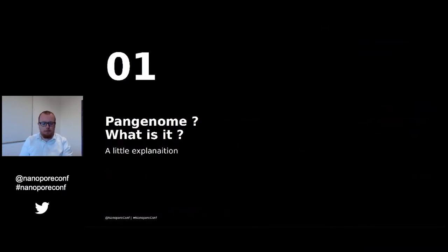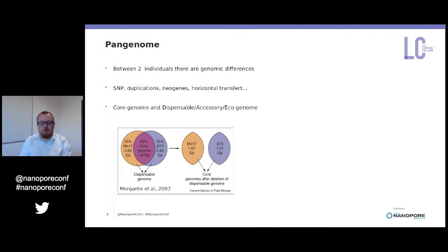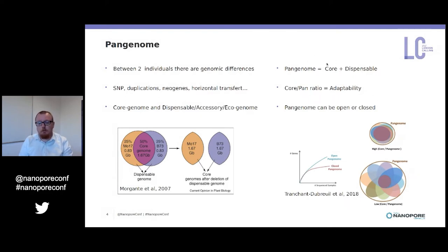What is a pan genome? The pan genome idea is that between two individuals we have differences not only in terms of SNPs but also in terms of regions and sequences. Between two individuals you may have duplications, different genes, horizontal transfers, and similar things. For instance, in maize, Morgan et al. in 2007 proposed that only 50 percent of the maize genome is shared between two varieties. The shared part is called the core genome, which belongs to all individuals in the species, and the non-shared part is called the dispensable genome or the echogenome, which is probably in charge of local adaptation.